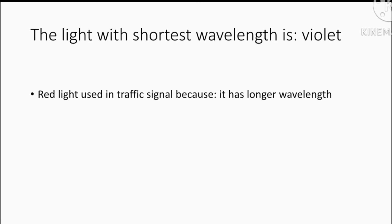Next is, red light used in traffic signals. Why is red light used in traffic signals? Because it has longer wavelength. Because the red light wavelength is maximum, that is why it is less scattered and shows away from the distance.